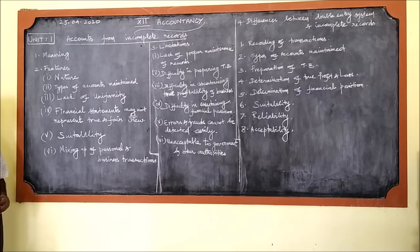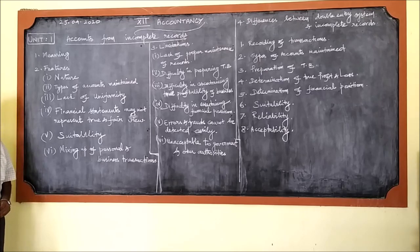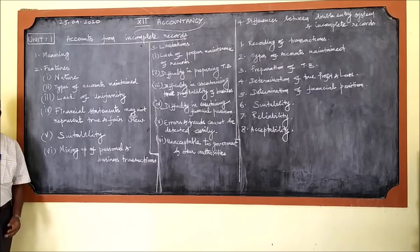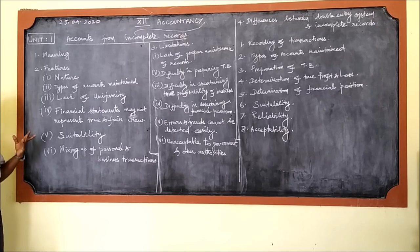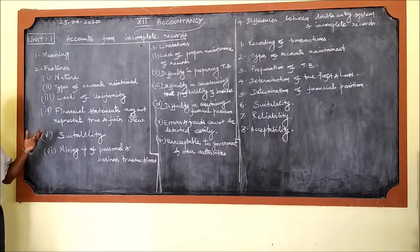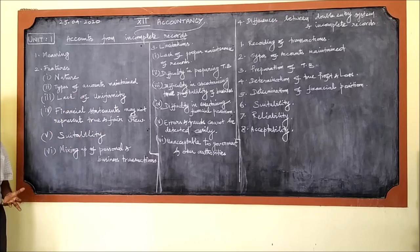Under the double entry system, we maintain journal and ledger, prepare a trial balance, and from that prepare final accounts — trading account, profit and loss account, and balance sheet, which we call financial statements. Since under incomplete records there is no journal, no ledger, no trial balance, there is no possibility of preparing final accounts or financial statements. Even if some accounts are prepared, they will not be proved under fact — something is always lacking.